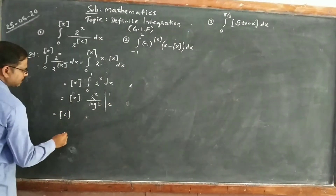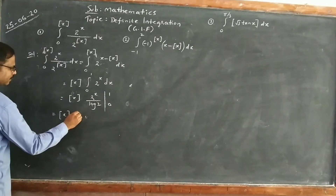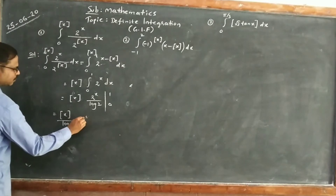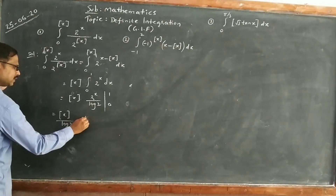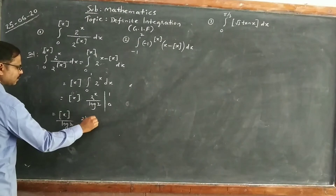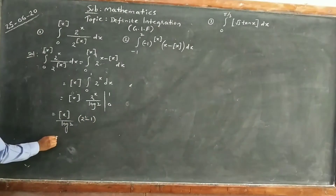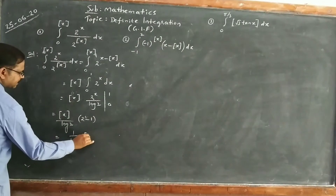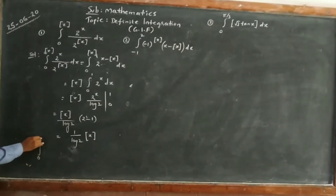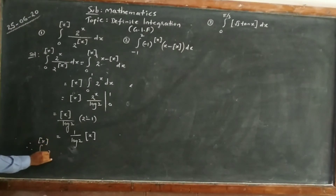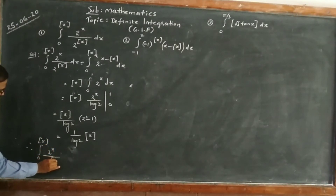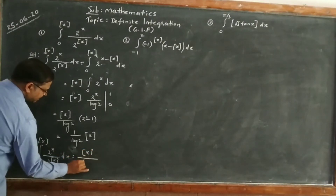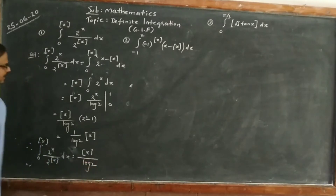So we get [x] times: 2^1 minus 2^0, divided by log 2. That gives [x] times (2 - 1) / log 2, so the answer is [x] / log 2. Therefore, the integral from 0 to [x] of 2^x / 2^[x] dx equals [x] / log 2.